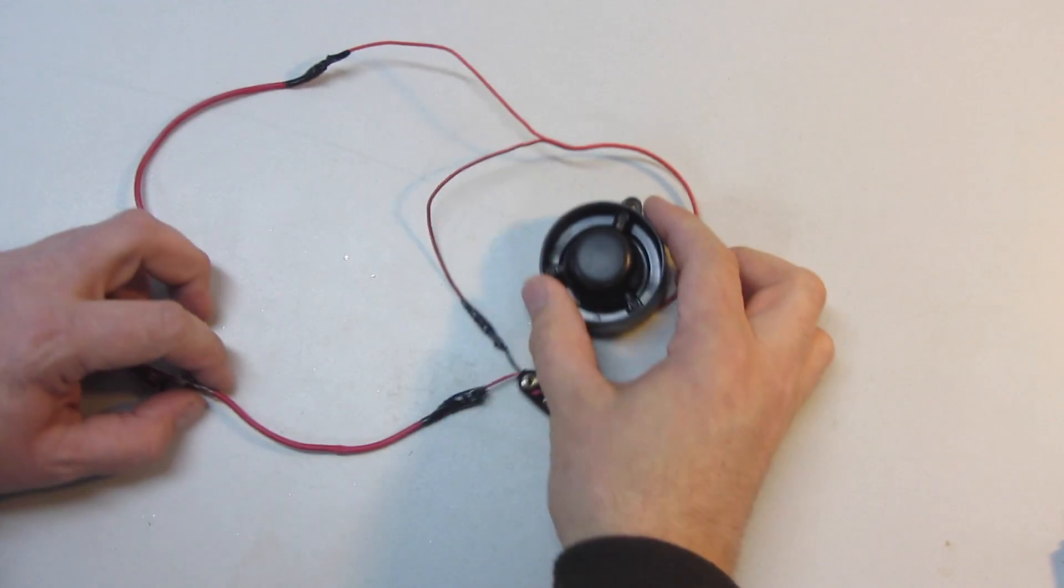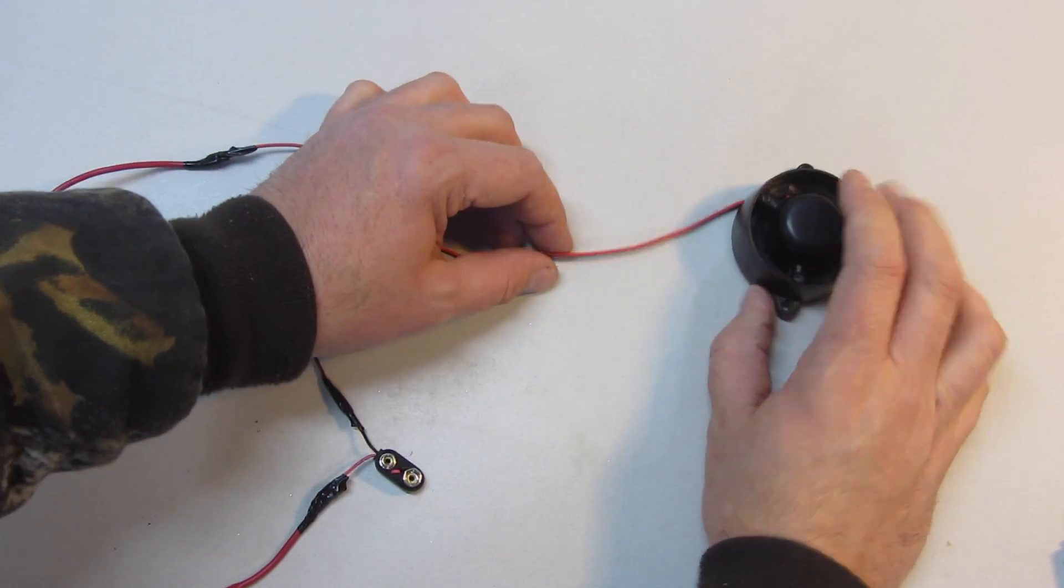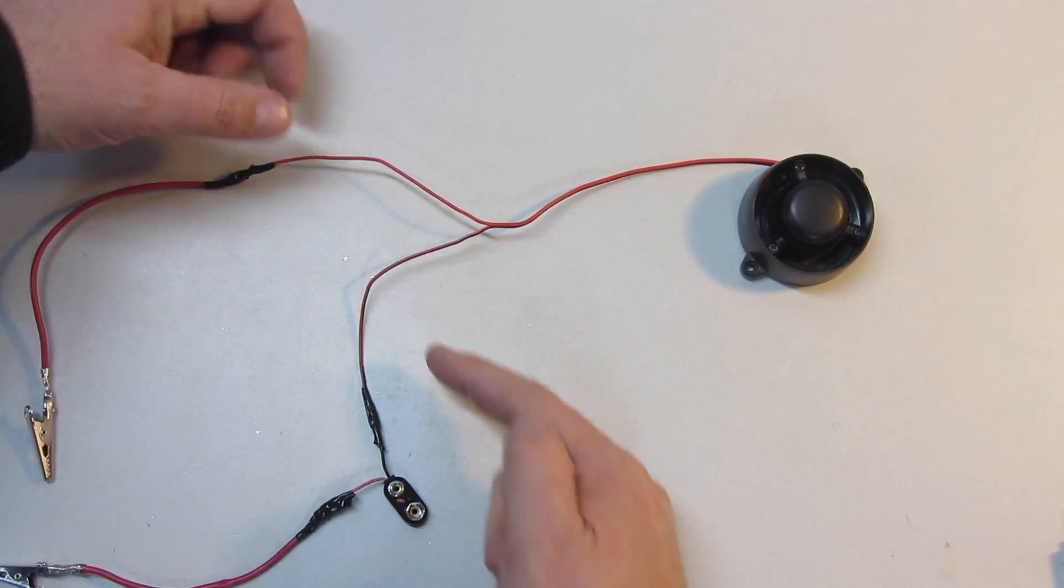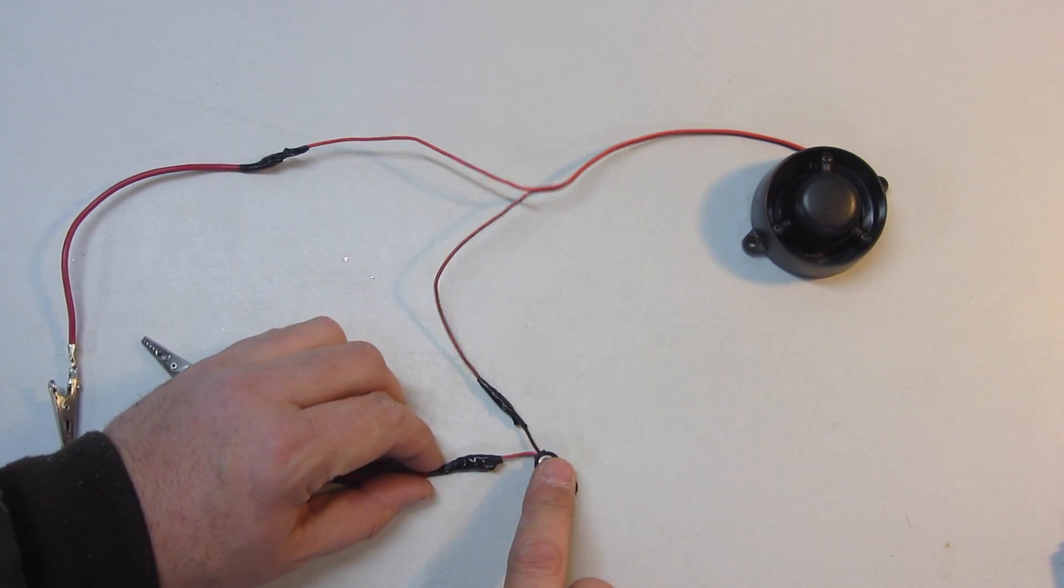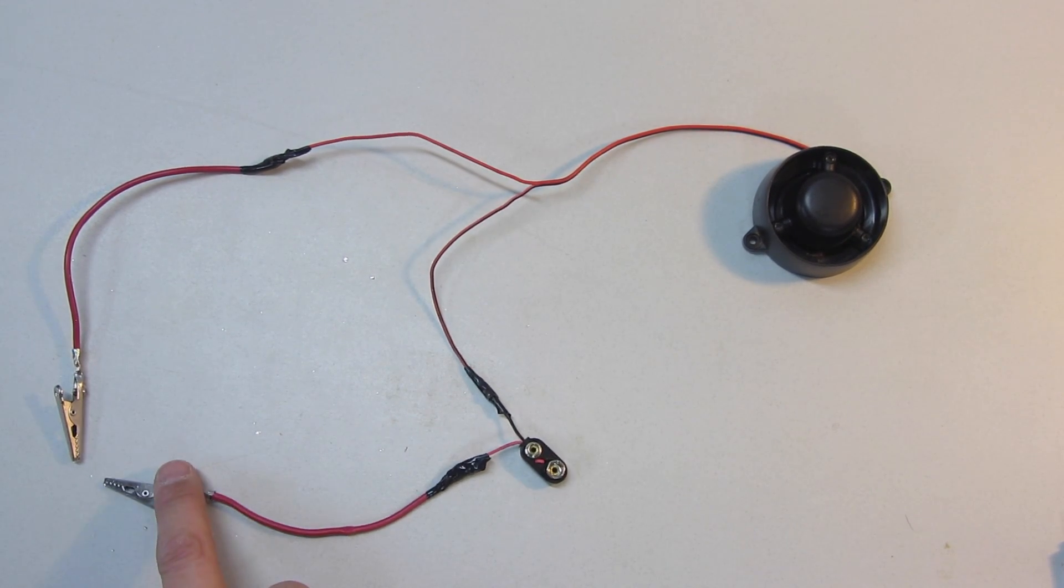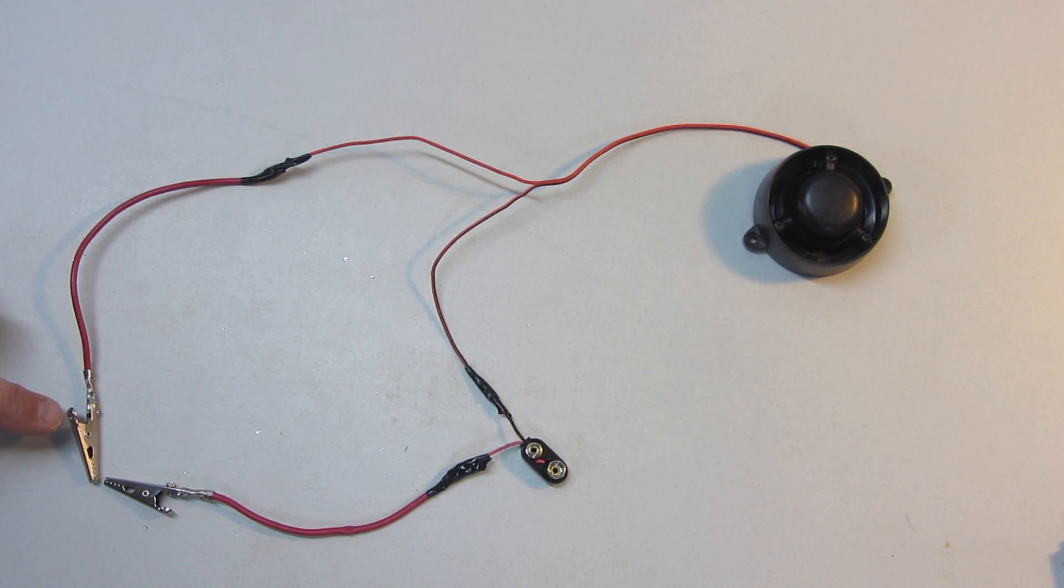So just to show what we have so far, I have the two wires coming off the buzzer, splitting. One goes to the battery terminal, which comes off and goes to an alligator clip. And the other one goes straight to an alligator clip, as you can see.